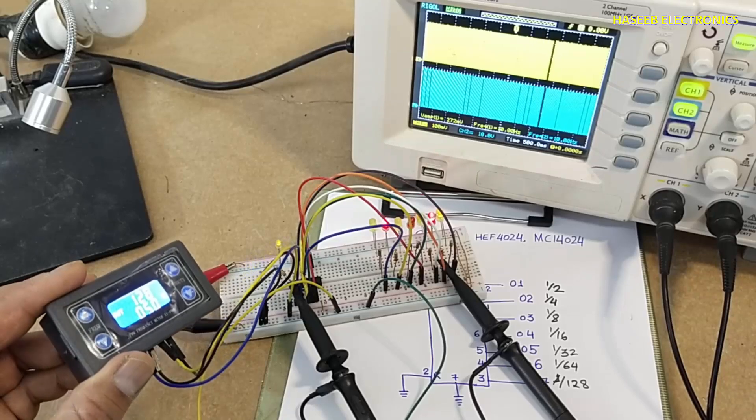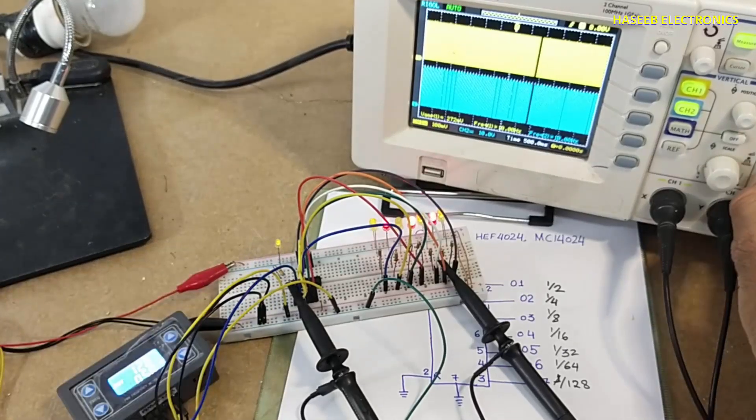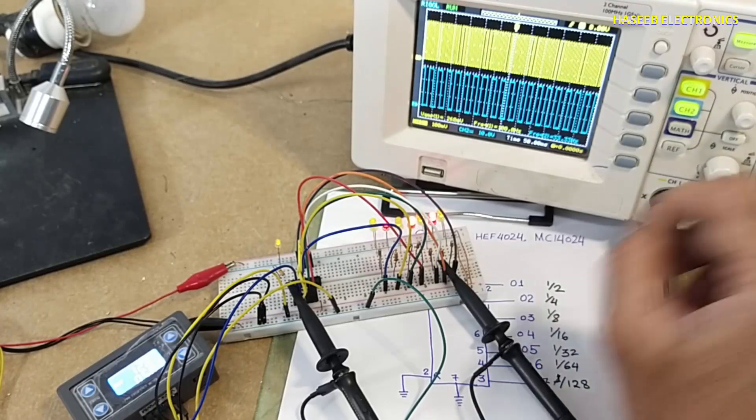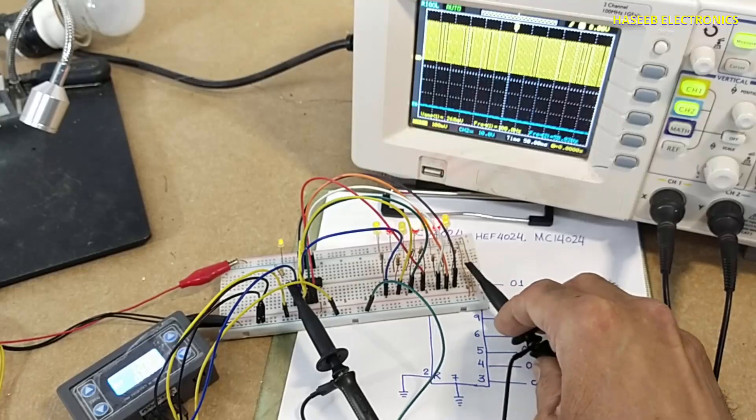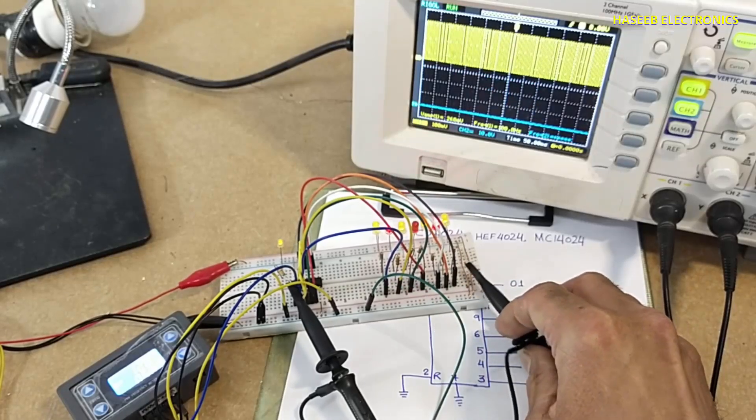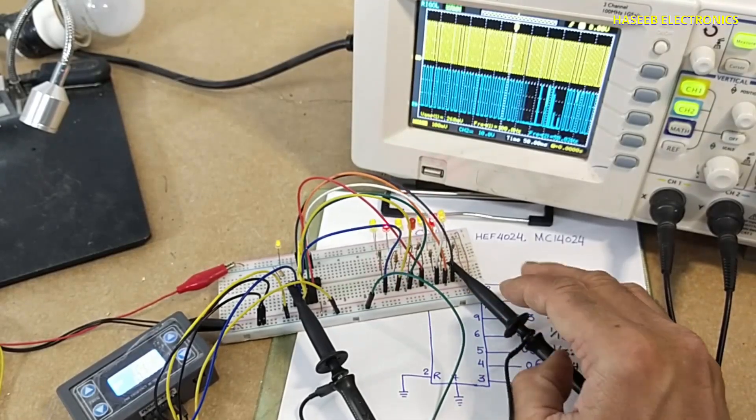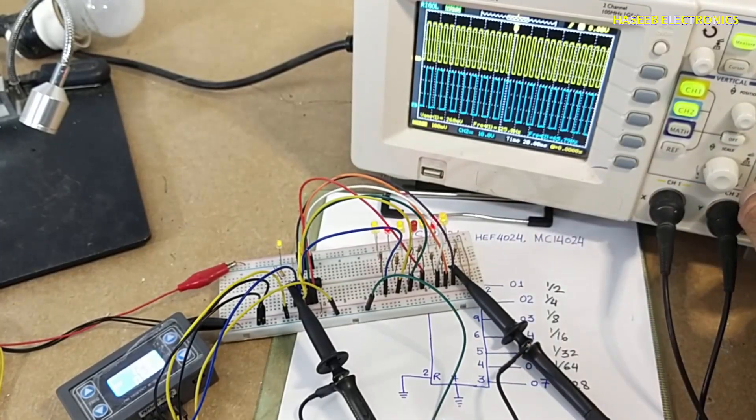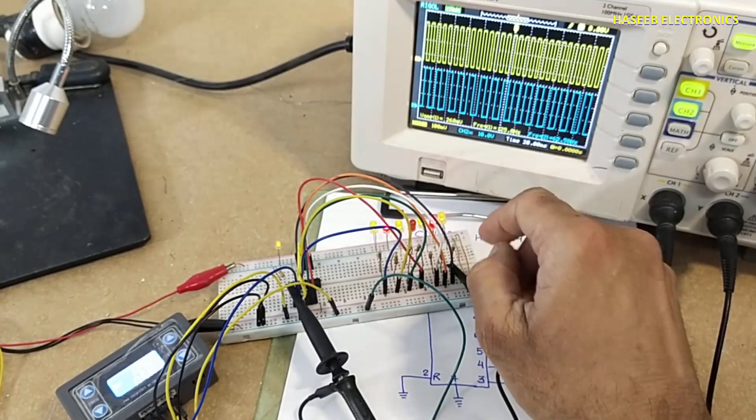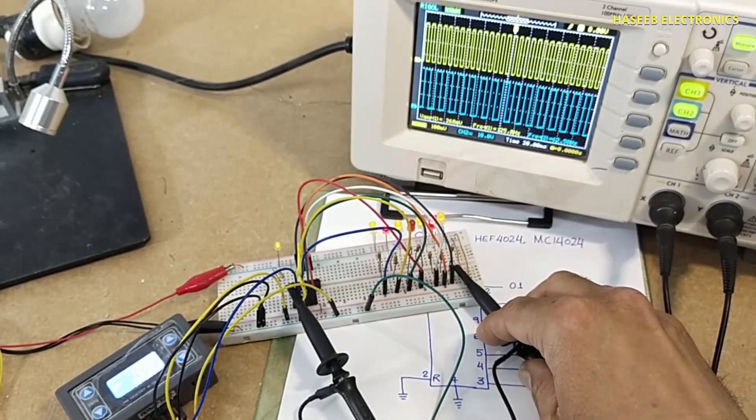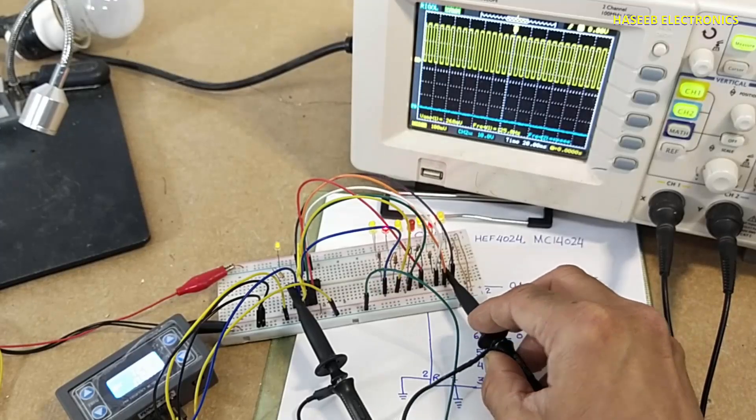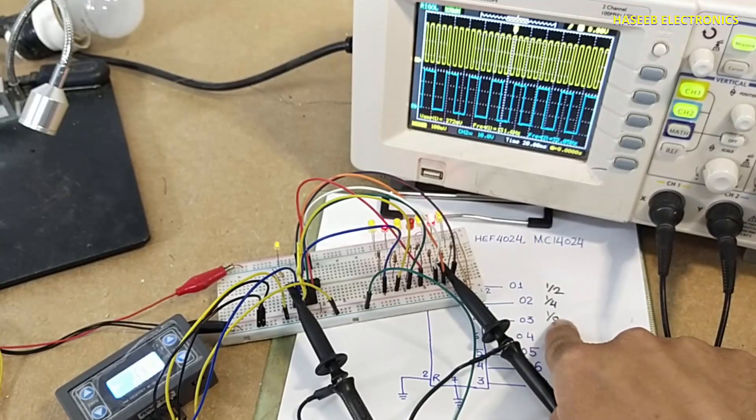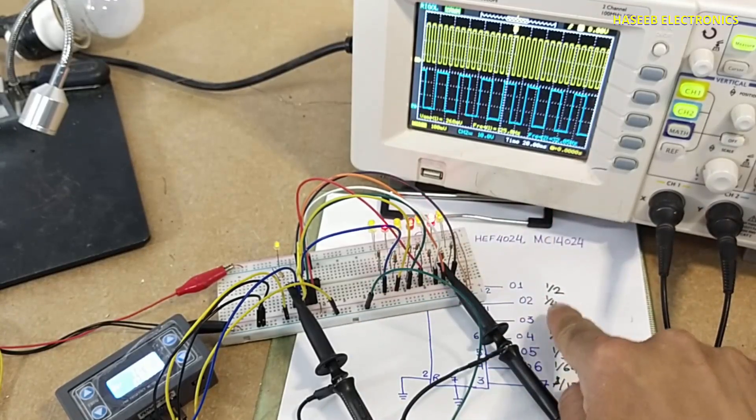Now the frequency is 128 hertz. Let's check frequency at first stage. First stage is providing 64 hertz. 128 hertz divided by 2. Here, 32 hertz, 128 divided by 4.